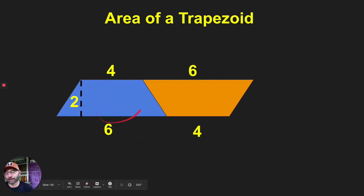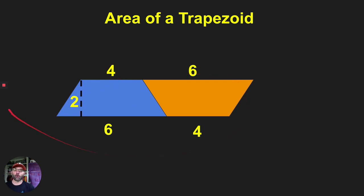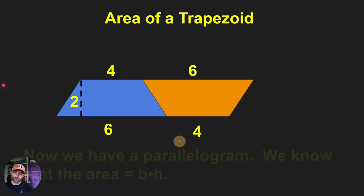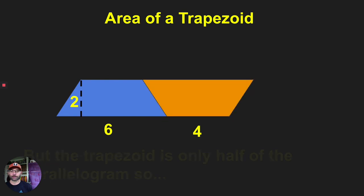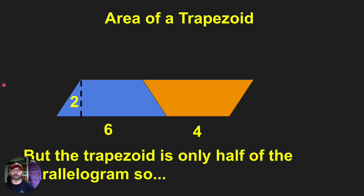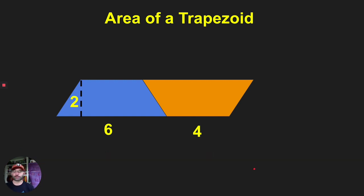We want just half of the parallelogram, which is the blue trapezoid. The whole parallelogram is twenty — six plus four is ten, times two is twenty — so we cut it in half. For a parallelogram the area is base times height, but the trapezoid is only half of the parallelogram.